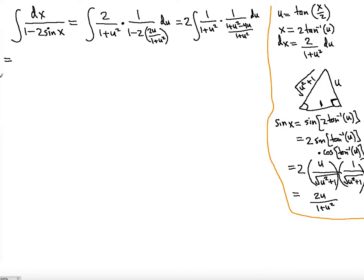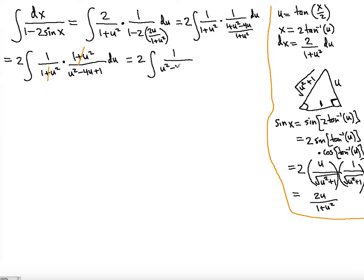This simplifies to 2 integral of 1 over (1 plus u²) — the (1 plus u²) from the numerator goes up top — and the bottom that remains is u squared minus 4u plus 1 du. The (1 plus u²) terms cancel, so in the end we have 2 integral of 1 over (u² minus 4u plus 1) du. The only approach now is integration by partial fractions.